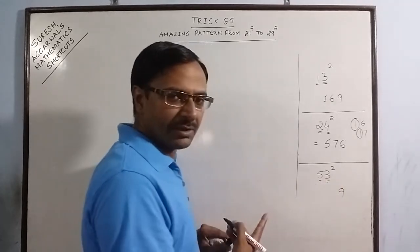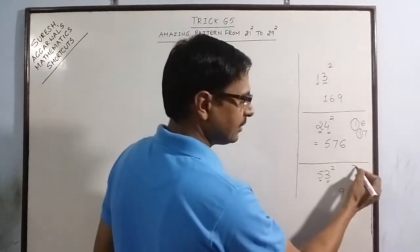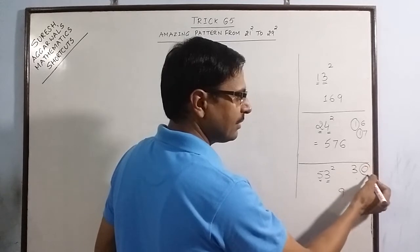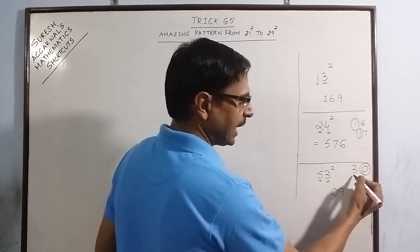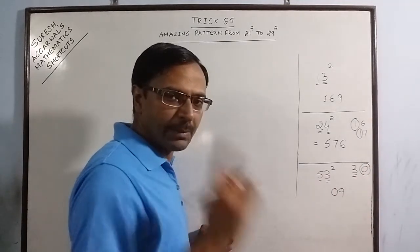5 times 3 is 15. Double of 15 is 30. So in 30 we retain 0. Carry forward 3. Remember 3 is carried forward.